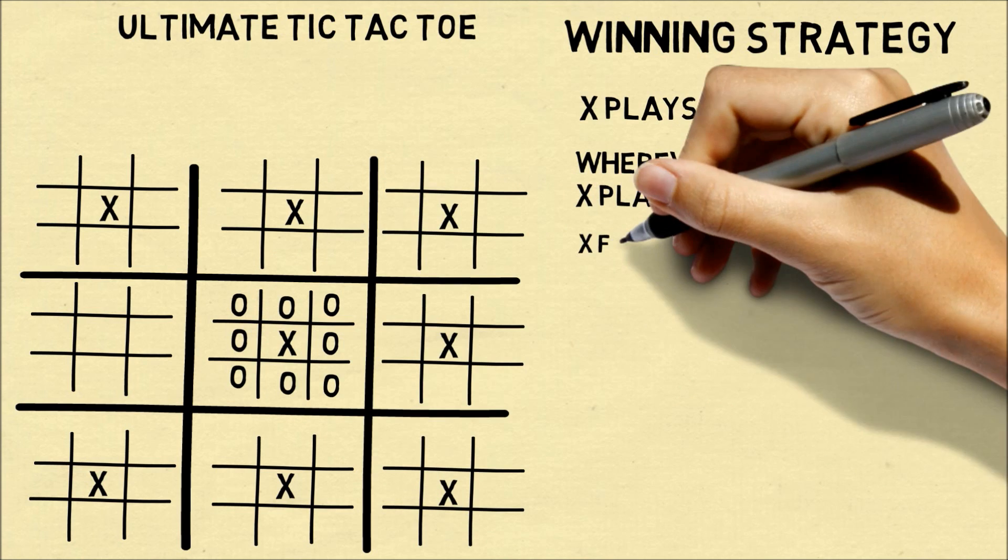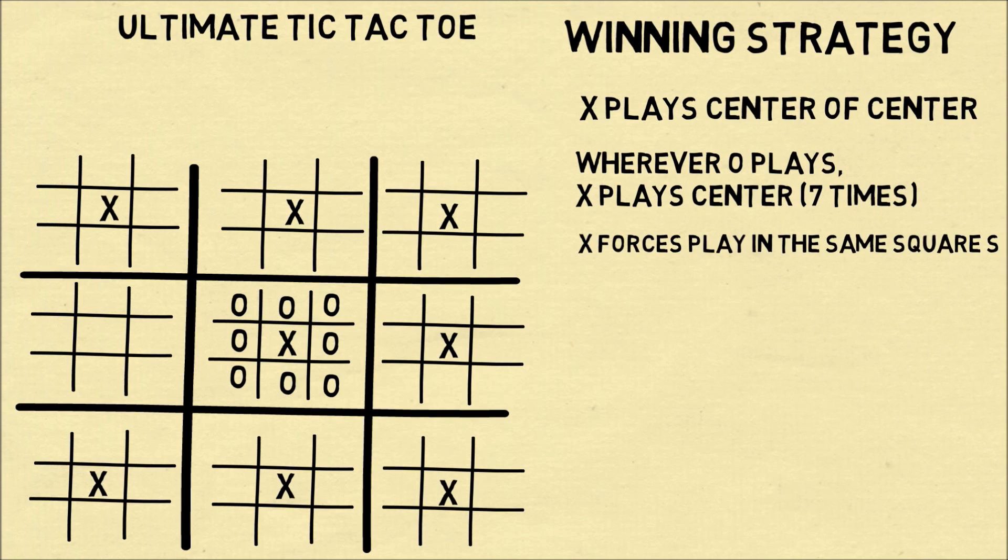For O's last move, you do not want to play the center. What you want to do is mimic the same strategy and force O to play in the same square wherever O had sent you.